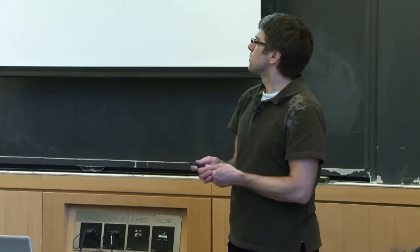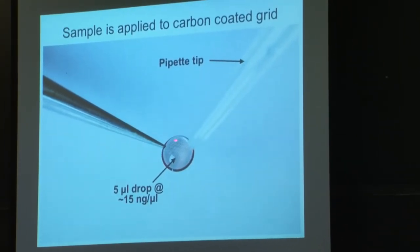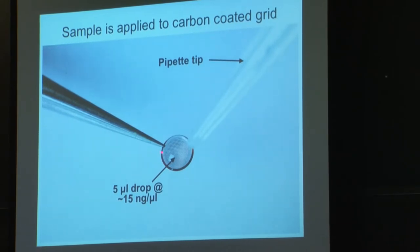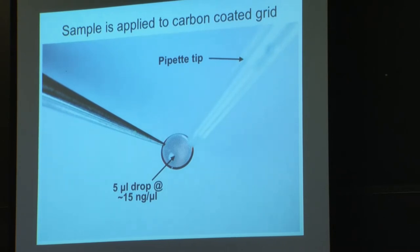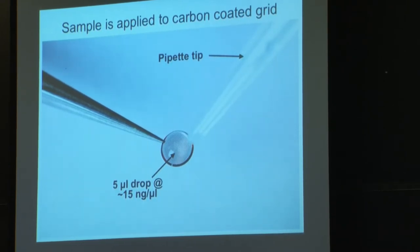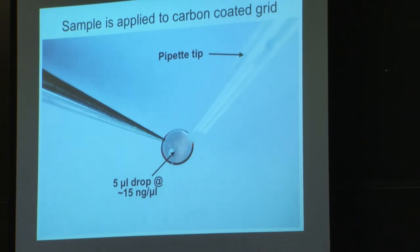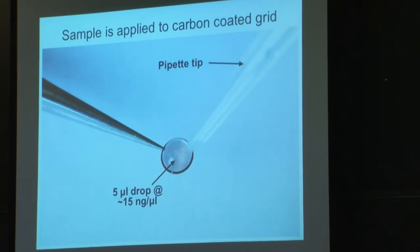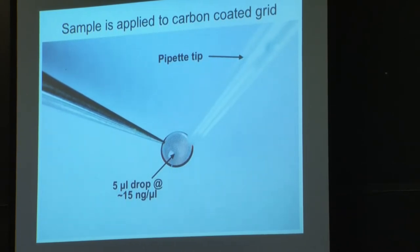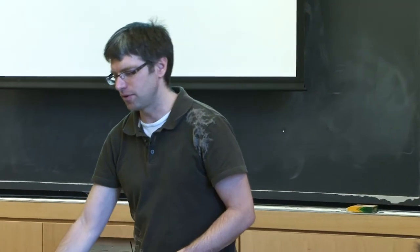To do the electron microscopy, we need to put our protein on something we can stick into the microscope — typically a metal mesh supporting a thin carbon film. This grid is about three millimeters across; you put about five microliters on it. To get a good dispersion of particles you need about 15 nanograms per microliter. Too much and you get protein everywhere and can't distinguish individual particles; too little and you have to collect lots of images to get a few particles. The sweet spot is 15 to 20 nanograms per microliter.